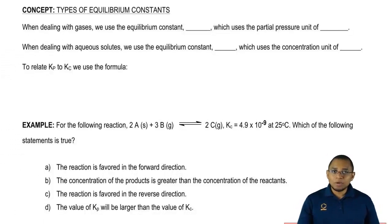Now we're going to say when dealing with gases, we usually use the equilibrium constant Kp. We're going to say Kp uses the partial pressure unit of atmospheres.